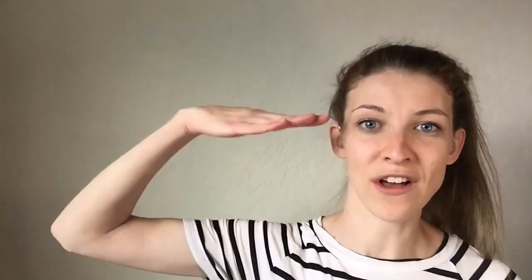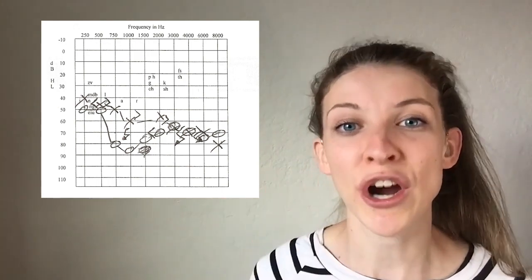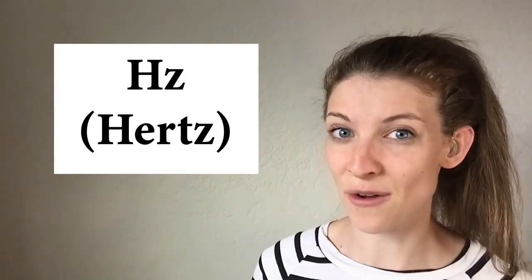Now we're going to talk about the top horizontal axis. Along the top you see frequency in hertz. Hertz measure the frequency of sound — this means pitch. Think about a piano: you have the low notes on the left side and the high-pitch notes on the right side — that's exactly how it's measured on the audiogram, in different levels of hertz. Fun fact: humans can hear up to 20,000 hertz, but because speech occurs from 0 to 8,000 hertz, that's what we measure, because speech is what develops the brain and is most important.